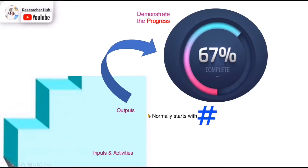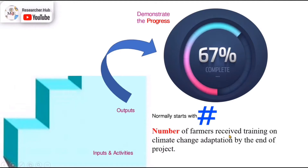Normally this level of indicator you will see starts with the number. For example: 'Number of farmers who receive training on climate change adaptation by the end of the project.' Number of families — it starts with number. Since this indicator only demonstrates the output, the progress of the output, or how many activities have been done and how many people were involved in that activity — it is about demonstrating the progress.